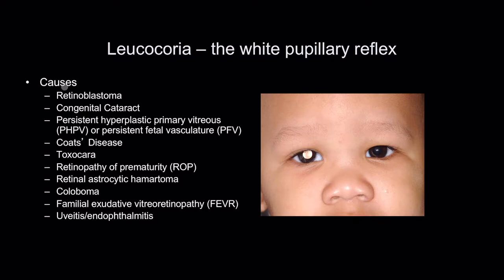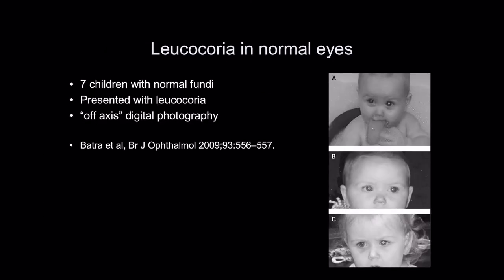The causes are retinoblastoma, which is one of the rarest causes but probably the most serious; congenital cataract; persistent hyperplastic primary vitreous or persistent fetal vasculature; Coates disease; Toxocara; retinopathy of prematurity; retinal astrocytic hematoma; coloboma; familial exudative vitreoretinopathy or FEVR; and uveitis or endophthalmitis.